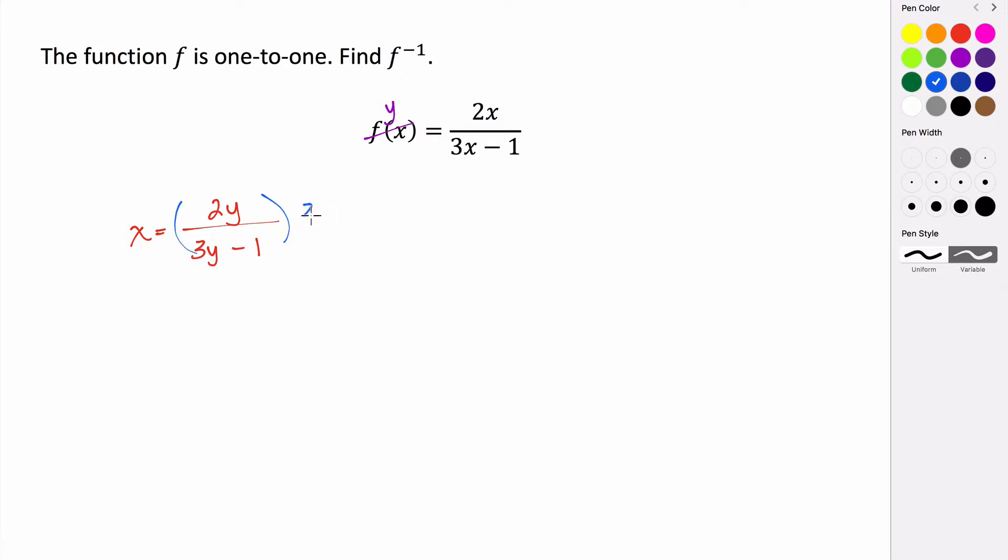We're going to multiply both sides by 3y minus 1. That's going to cause these to cancel, and then we're going to distribute the x through.